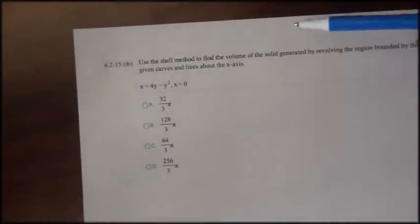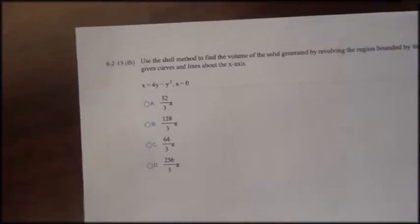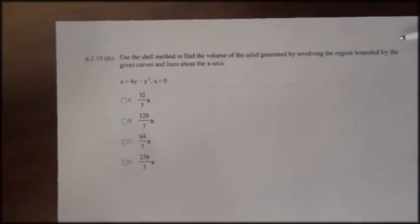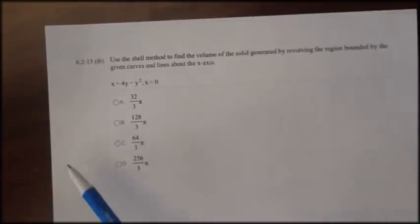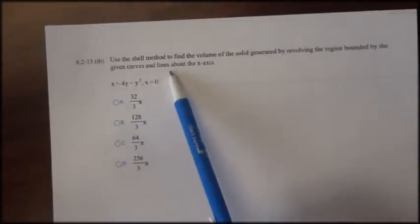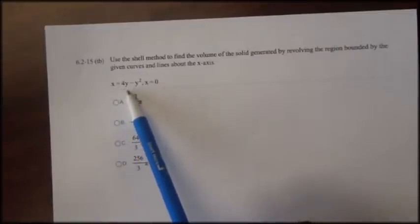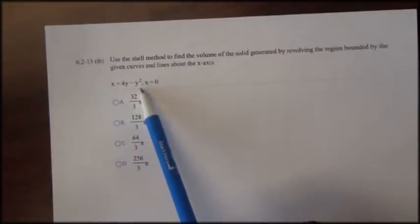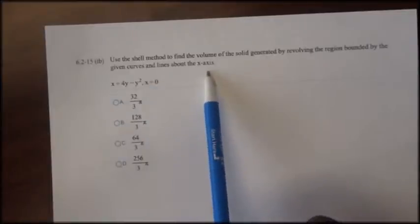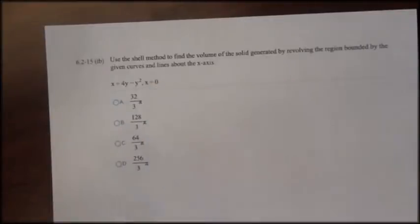In this example, we'll use the shell method to find the volume of a solid generated by revolving the region bounded by the curve and the line about the x-axis. We're given the curve x equals 4y minus y squared, and it's bounded by the x-axis and x equals 0.